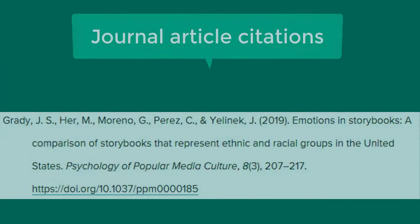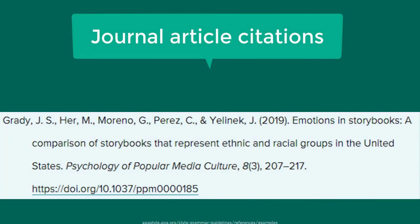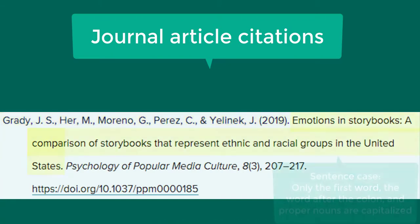Journal article citations follow this format: author last name, comma, first and middle name initials. If there are multiple authors, also include their names in the same format. After the author is the year of publication in parentheses, followed by a period.